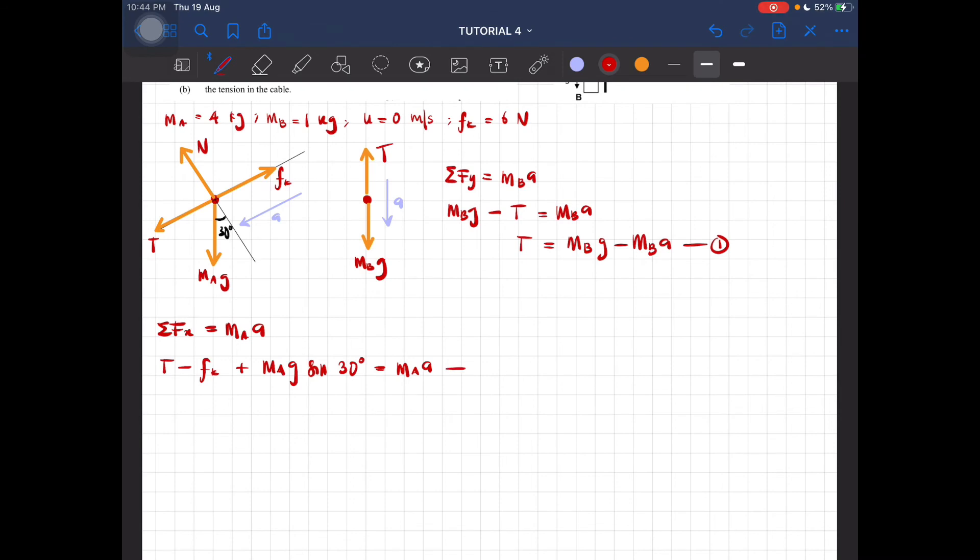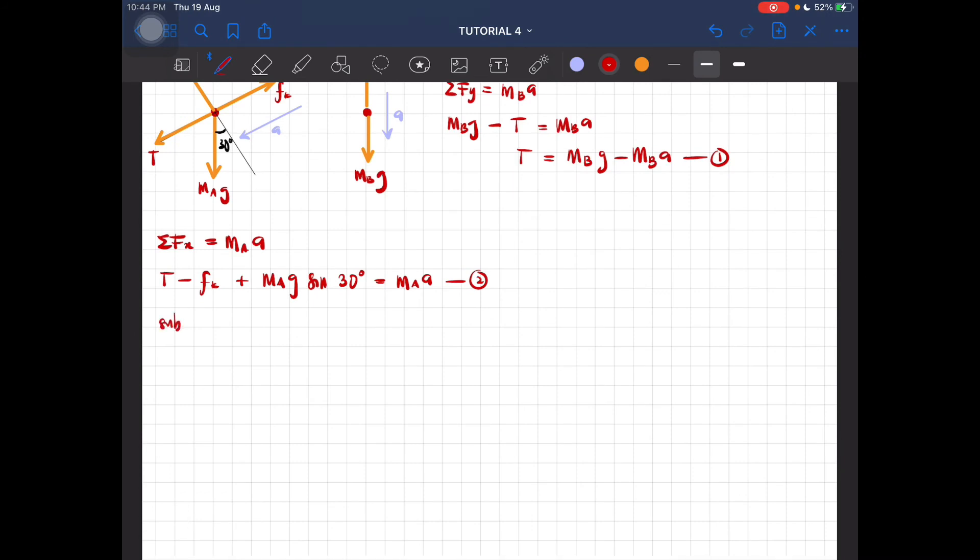We can substitute equation 1 into equation 2: m_B g minus m_B a minus f_k plus m_A g sin 30 degrees equals m_A a. From here you can rearrange and substitute to get the acceleration equal to 4.69 meters per second squared.